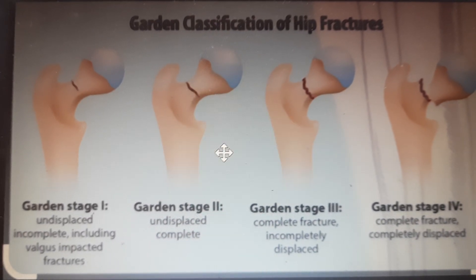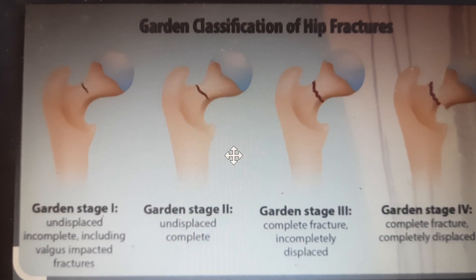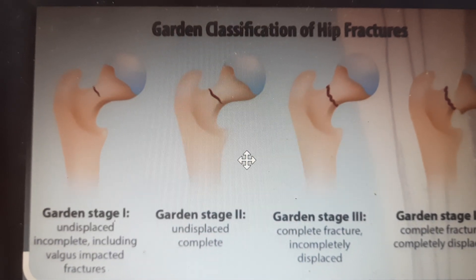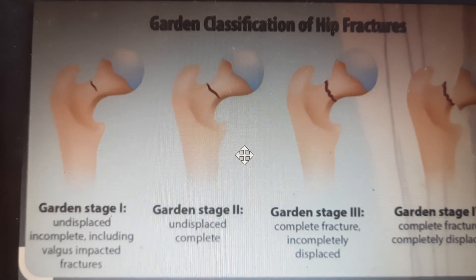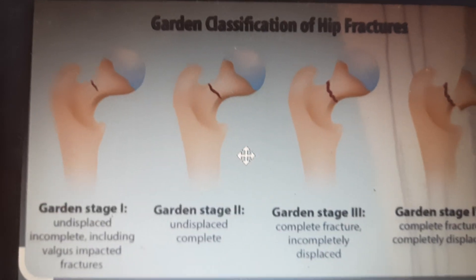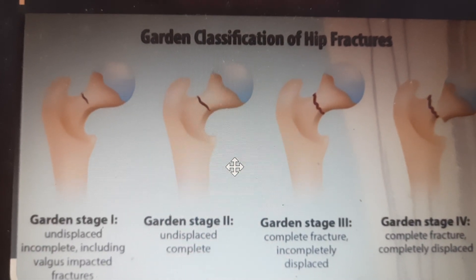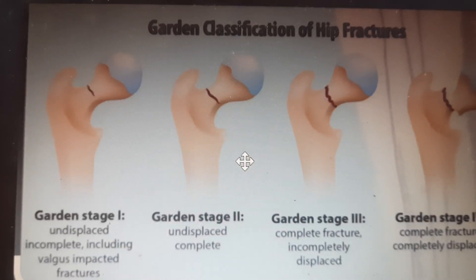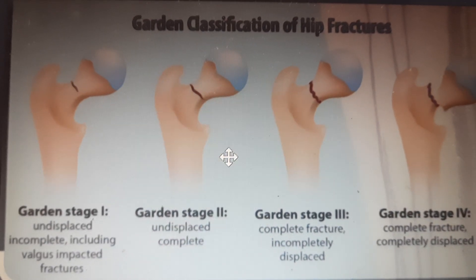I am going to talk about the easy way of remembering Garden Classification of the fracture of the neck of the femur. It is used for fracture of the neck of the femur, which is an intra-articular fracture, and it has Garden stages 1, 2, 3, and 4.